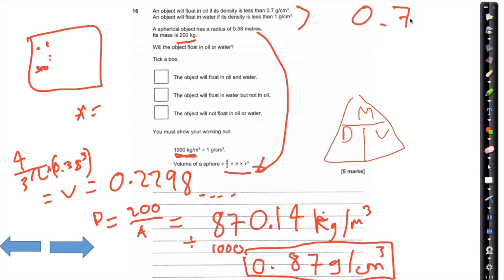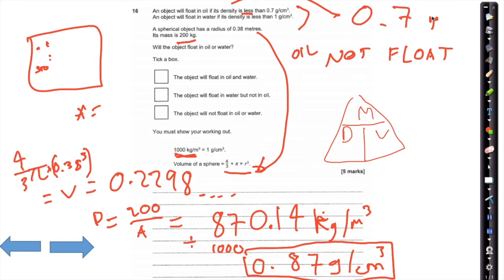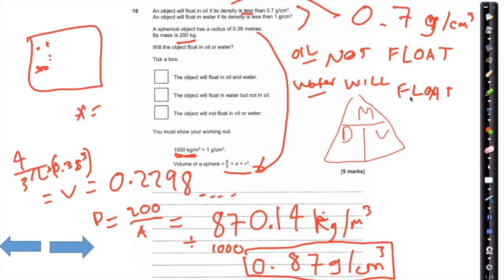Our object has a density of 0.87 g/cm³. Oil has density 0.7 g/cm³ — since 0.87 is greater than 0.7, the object will not float on oil. Water has density 1 g/cm³ — since 0.87 is less than 1, the object will float on water. It will float on water but not on oil.